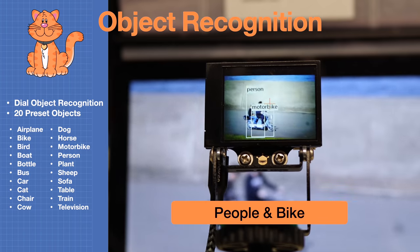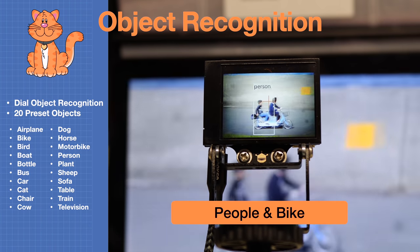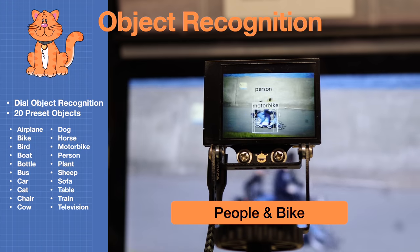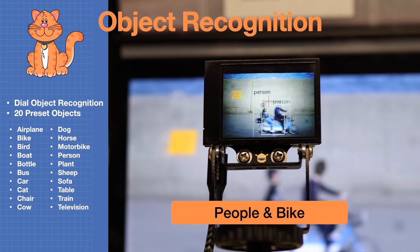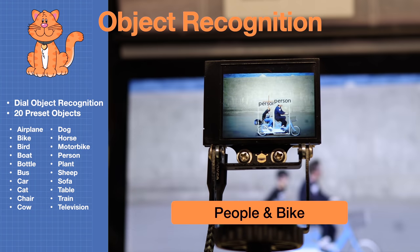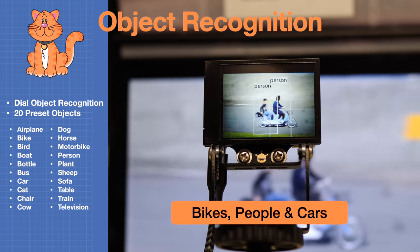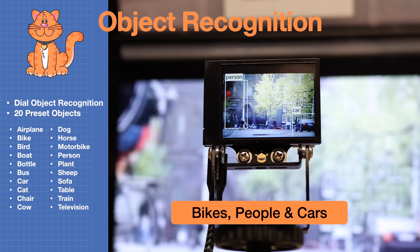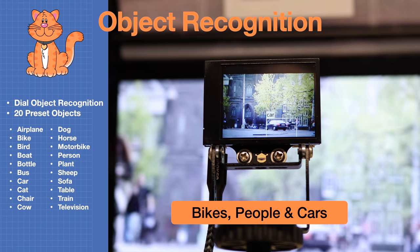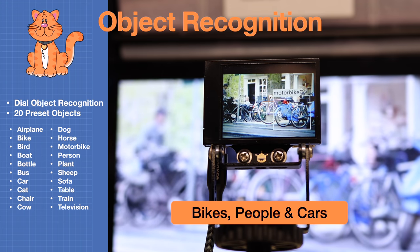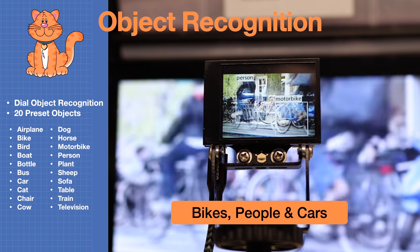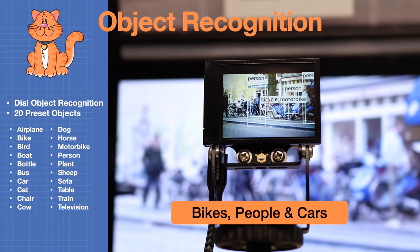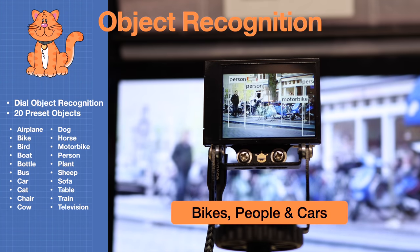Object recognition was particularly impressive for persons and motorbikes. A bicycle built for two would alternate between bicycle and motorbike, which is understandable. Most impressive were scenes of Amsterdam with numerous bicycles, cars, and people — the Husky Lens did a great job of tracking them no matter how many were in the scene. Overall, for object recognition this device does a pretty good job right out of the box.